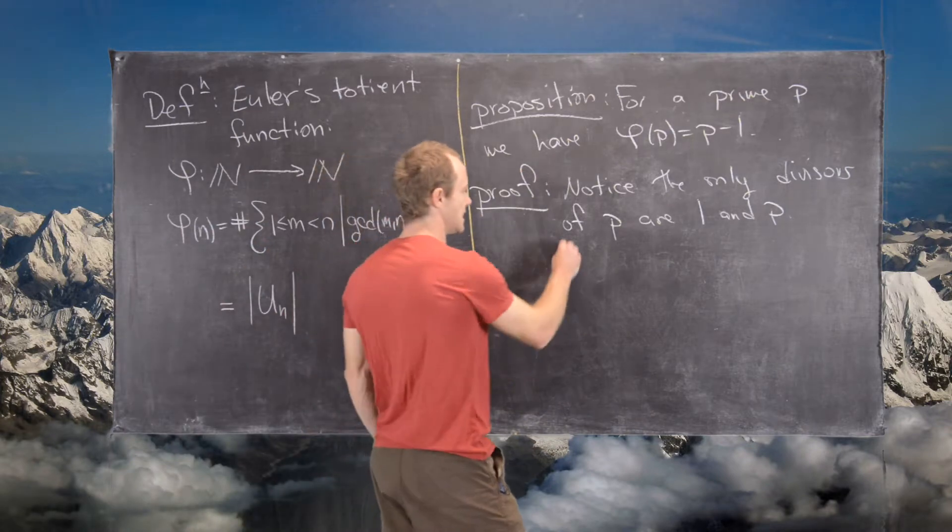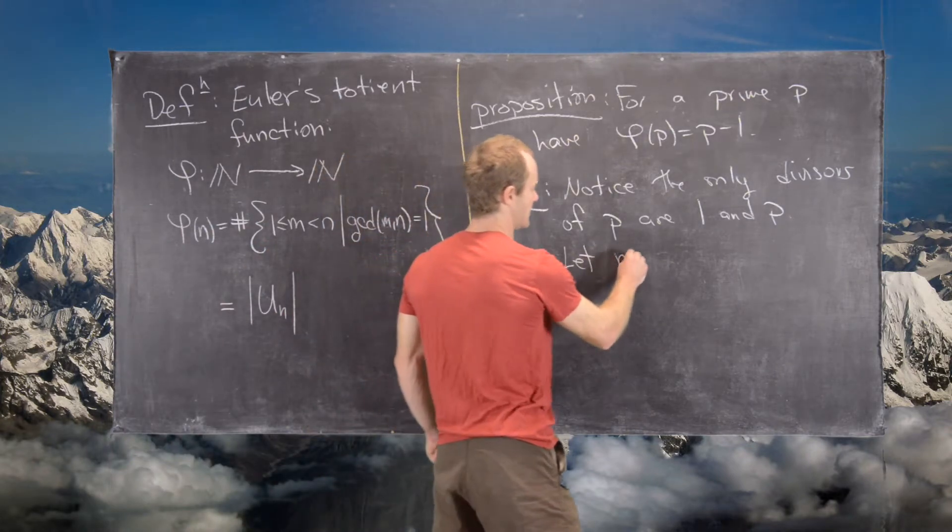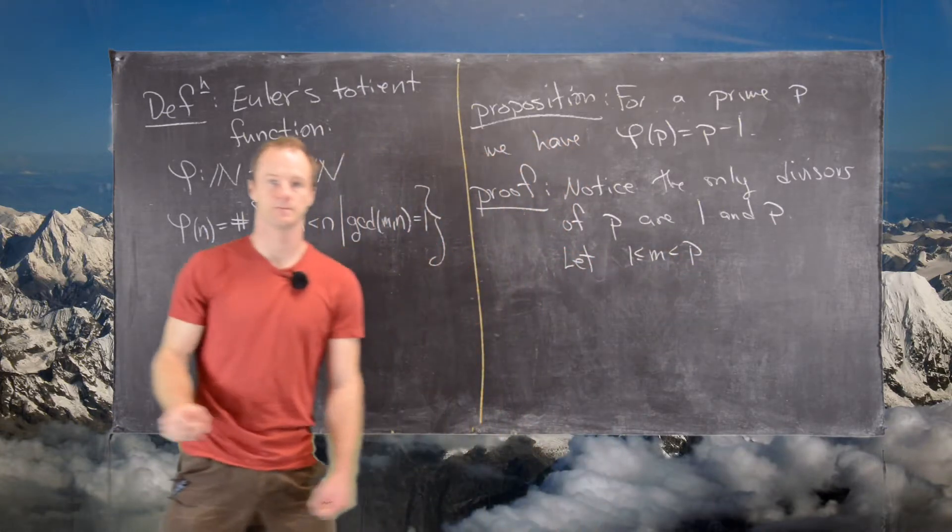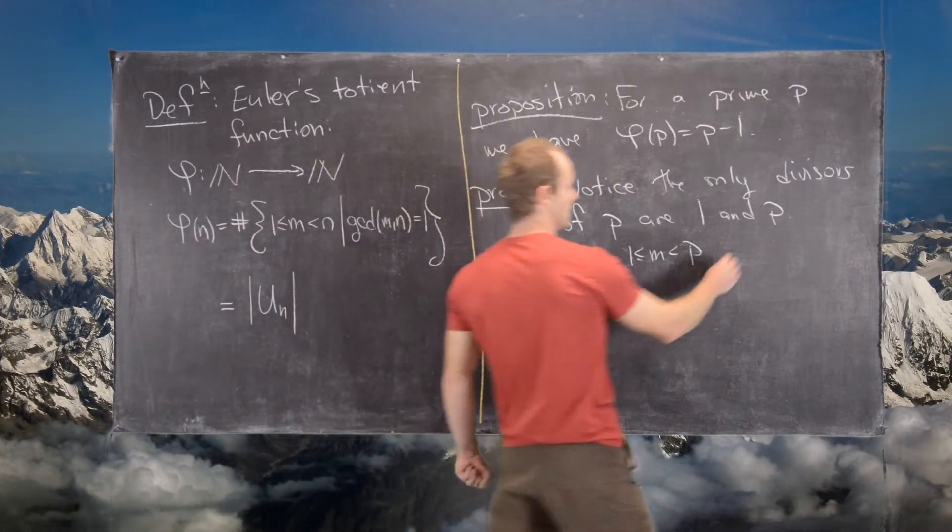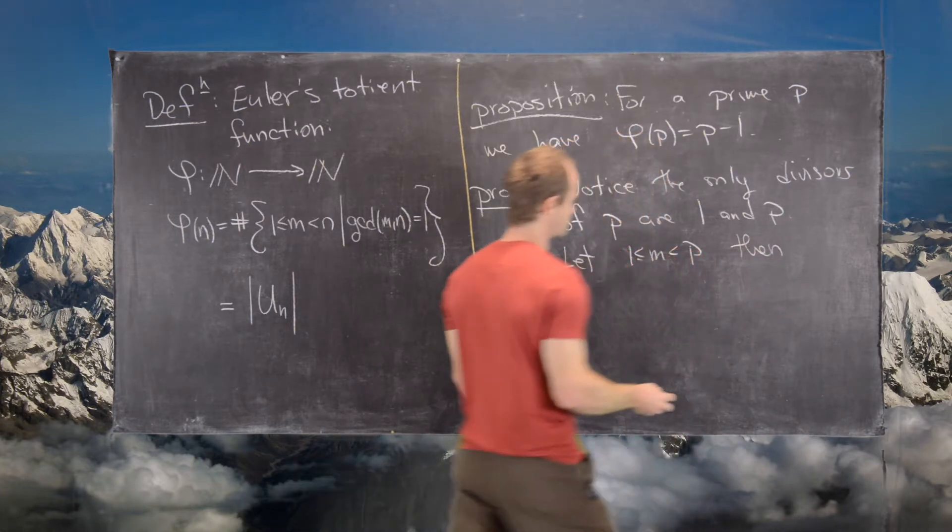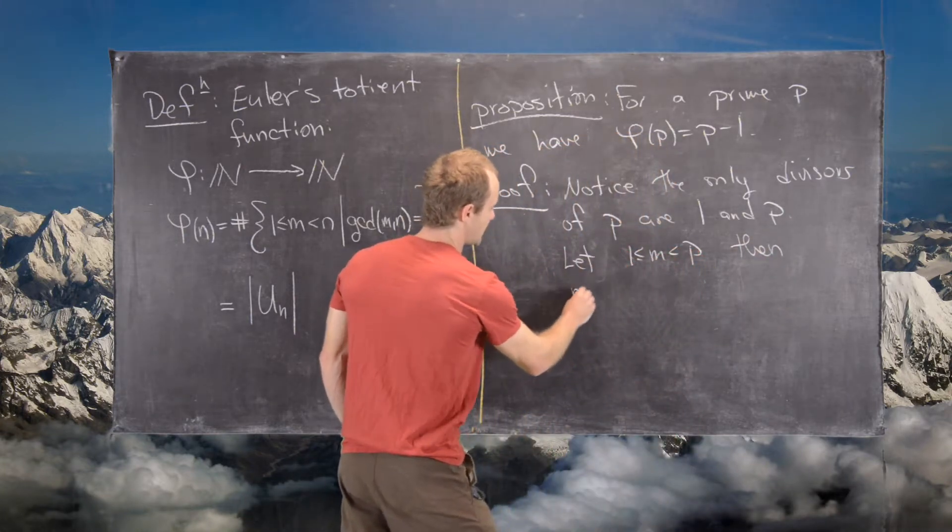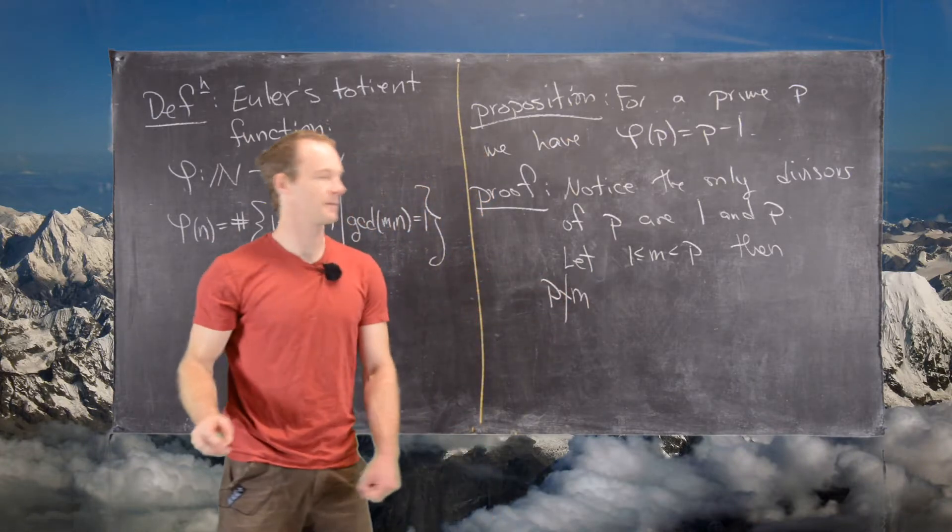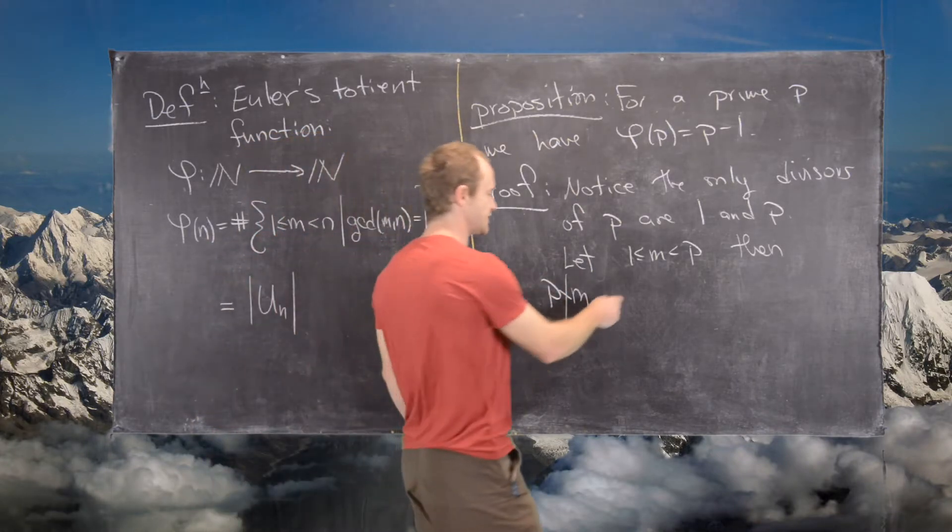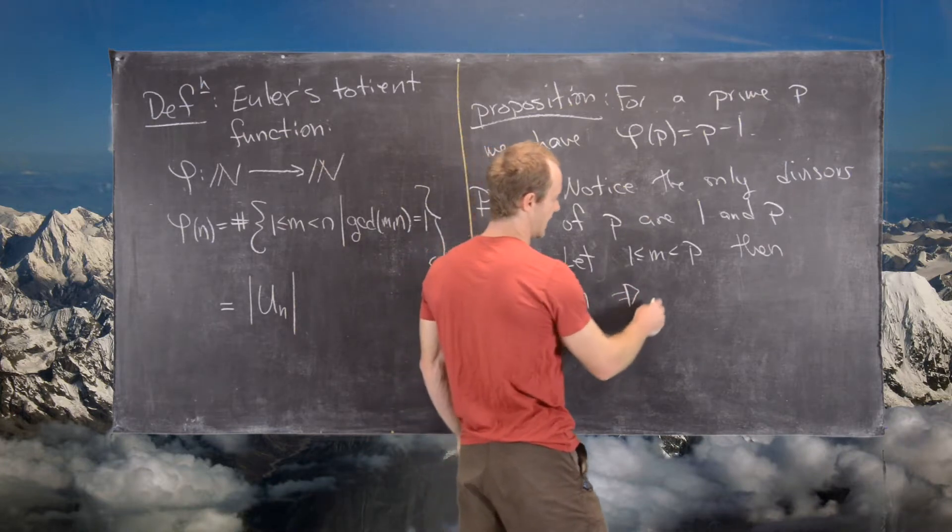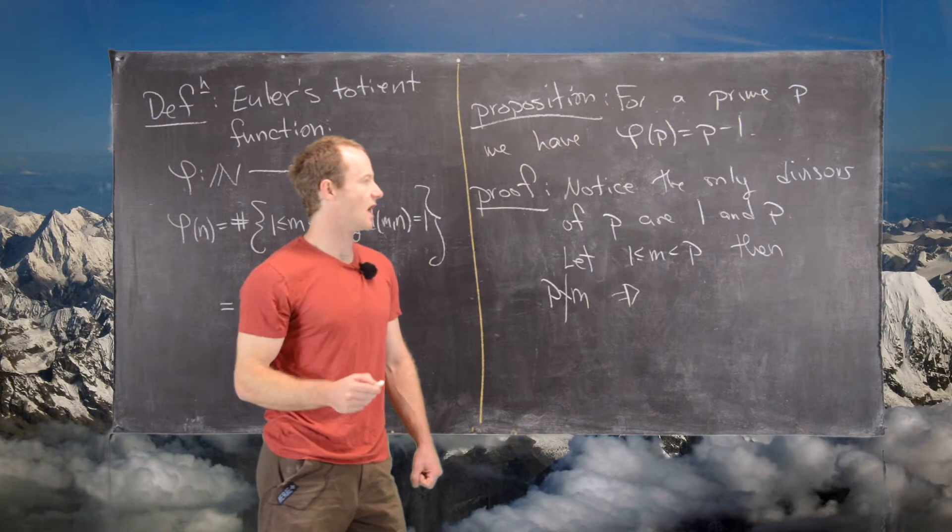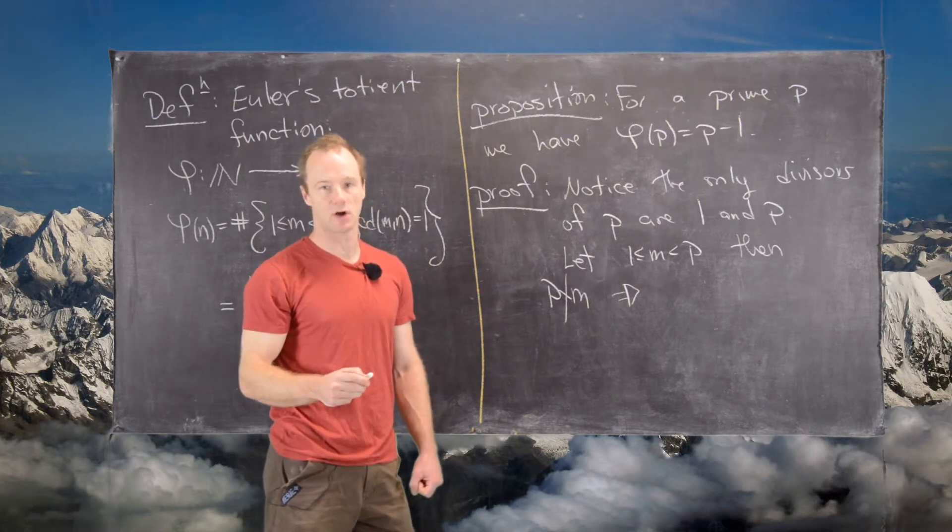And now if we let M be less than P, then M cannot be divisible by P because it's smaller than P, which tells us that the only divisors of P that divide M are also 1.